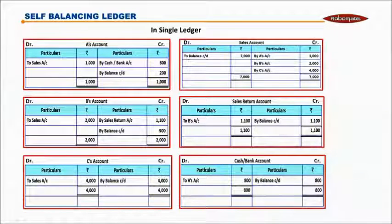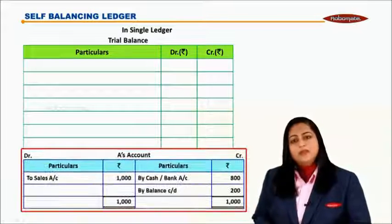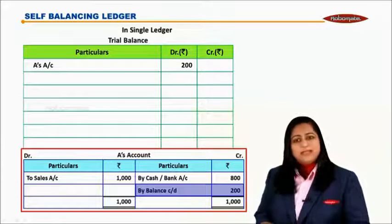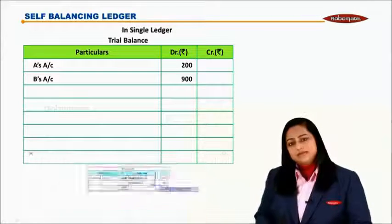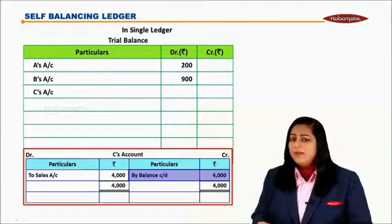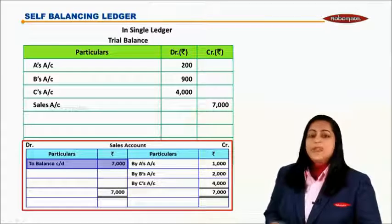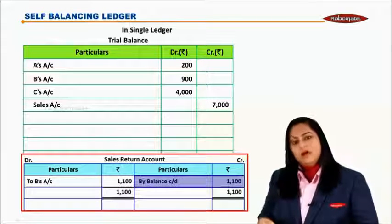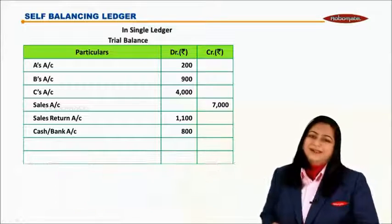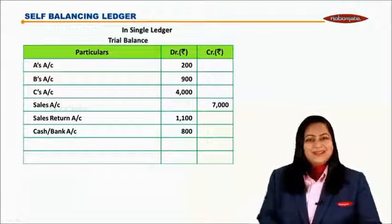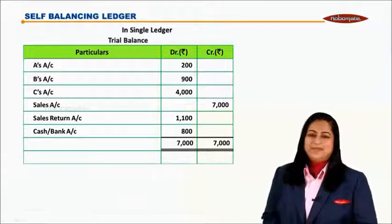Now all six accounts appear in one single book. If I want to make a trial balance, A's account debit balance of 200 appears on the debit side; B's account debit balance of 900 on the debit side; C's account debit balance of 4000 on the debit side; sales account credit balance of 7000 on the credit side; sales return account debit balance on the debit side; and cash/bank account 800 on the debit side. This trial balance will tally at rupees 7,000.